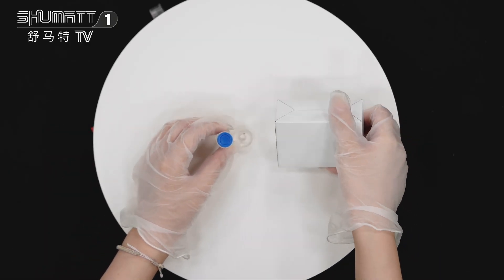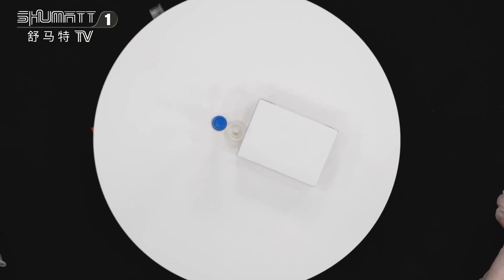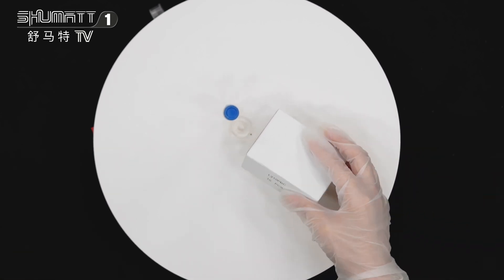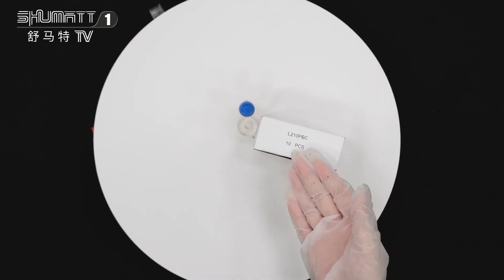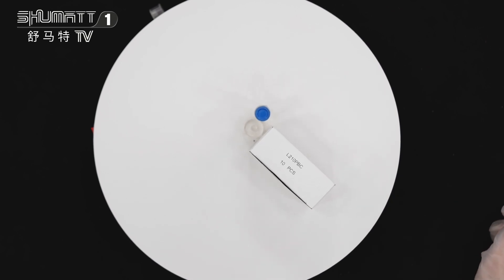Okay, you will see this is the inside packing and outside packing. Outside packing is this white box and here this is the label. The part number is L210PBC and the quantity we have is 10 pieces.